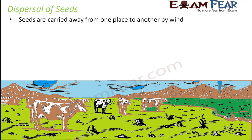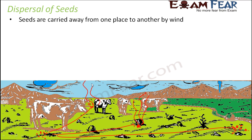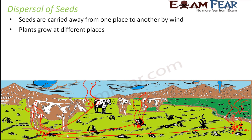These seeds are carried away from one place to another by wind, and that is called dispersal of seeds. A seed produced by one plant can be carried by wind to several different locations. Over a period of months or years, you will have new plants growing in all those areas, whereas without seed dispersal, all the plants would remain concentrated in one area.